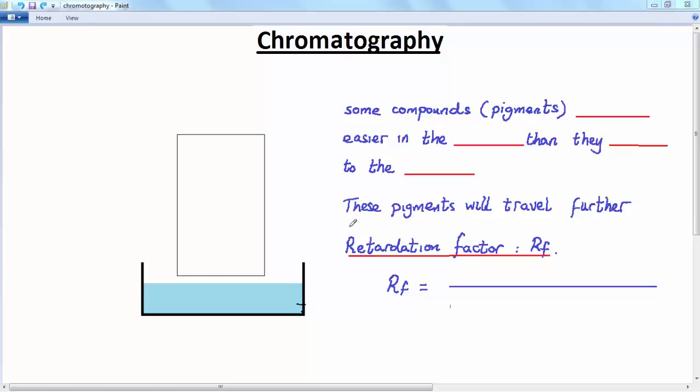In this lesson we're going to look at chromatography. Chromatography is a process we use to separate the different components of substances such as inks or food colorings. These are examples of mixtures of different components called pigments. So chromatography is a way of separating these different pigments from the ink or the food coloring.